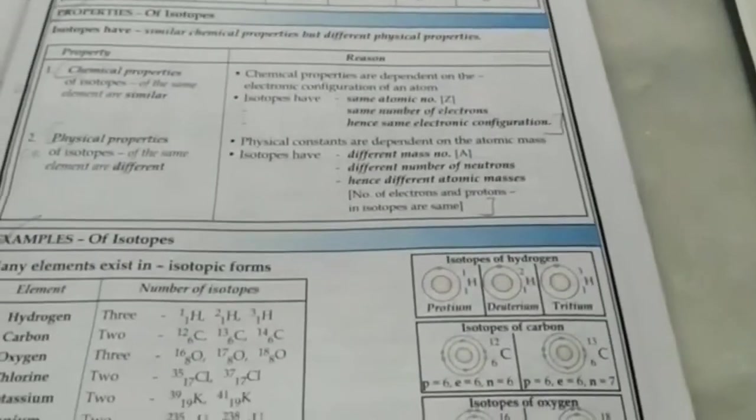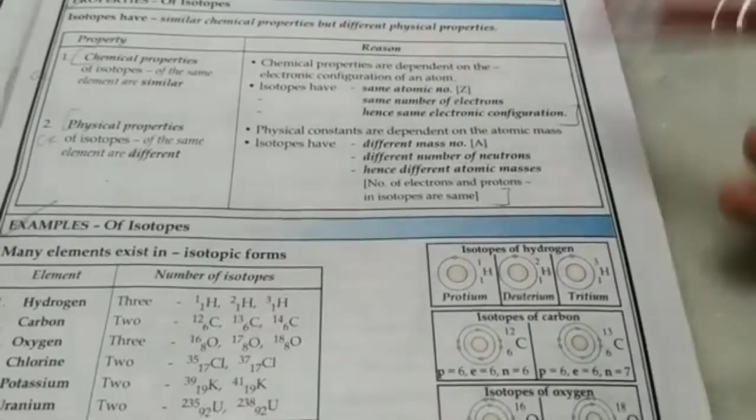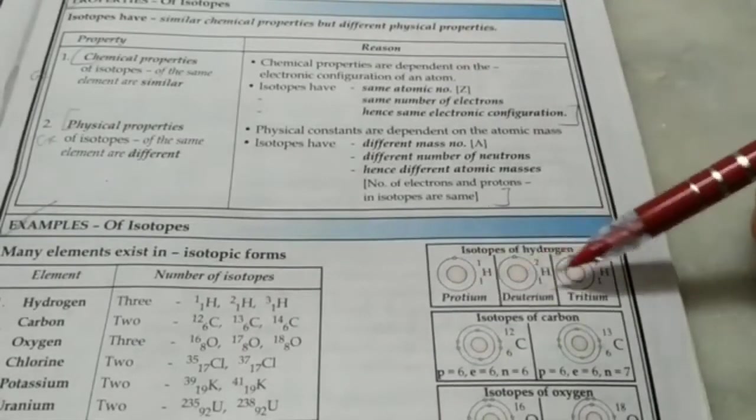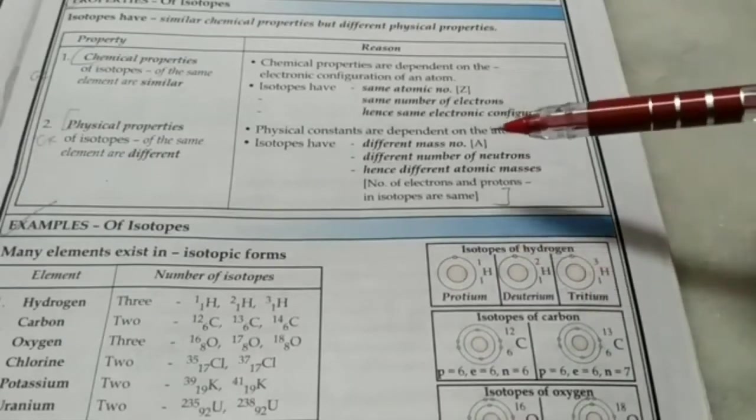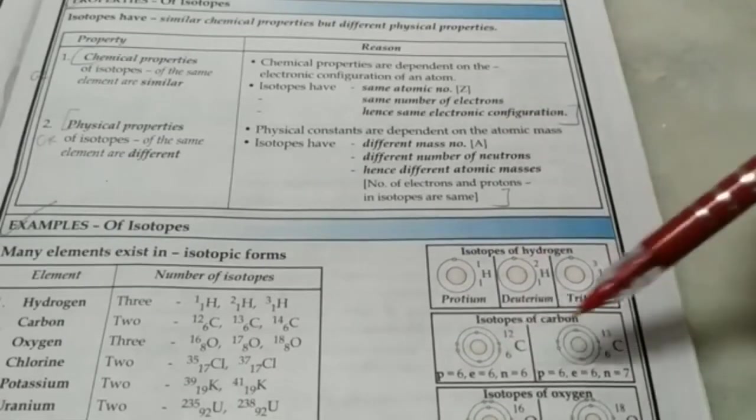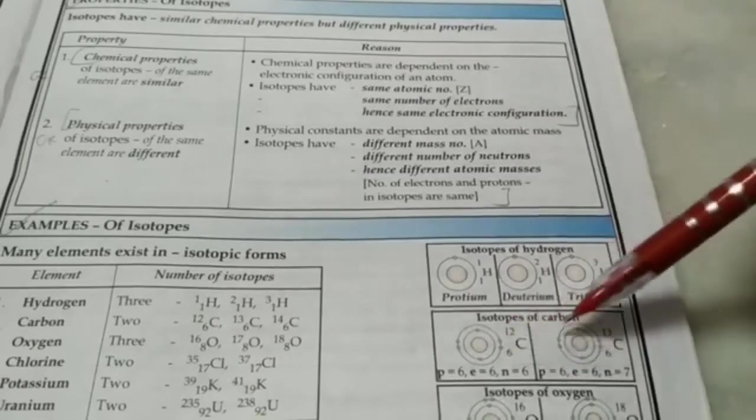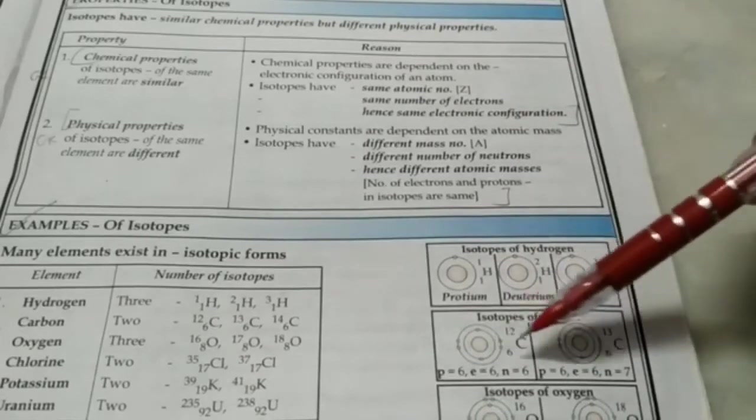Now, about isotopes, as I said, they are atoms of the same element having the same atomic number but different mass numbers because the number of neutrons are different. Now, since they will have the same electronic configuration, 2, 6, 2, 6, the chemical properties will be same because chemical properties only depend on the electronic configuration, that is the valency.